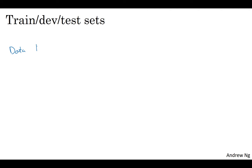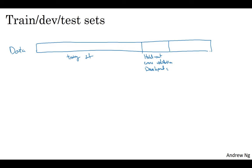So if this is your training data, let's draw that as a big box, then traditionally you might take all the data you have and carve off some portion of it to be your training set, some portion of it to be your holdout cross validation set, and this is sometimes also called the development set. And for brevity, I'm just going to call this the dev set, but all of these terms mean roughly the same thing. And then you might carve out some final portion of it to be your test set. So the workflow is that you keep on training algorithms on your training set and use your dev set or your holdout cross validation set to see which of many different models performs best on your dev set. And then after having done this long enough, when you have a final model that you want to evaluate, you can take the best model you have found and evaluate it on your test set in order to get an unbiased estimate of how well your algorithm is doing.